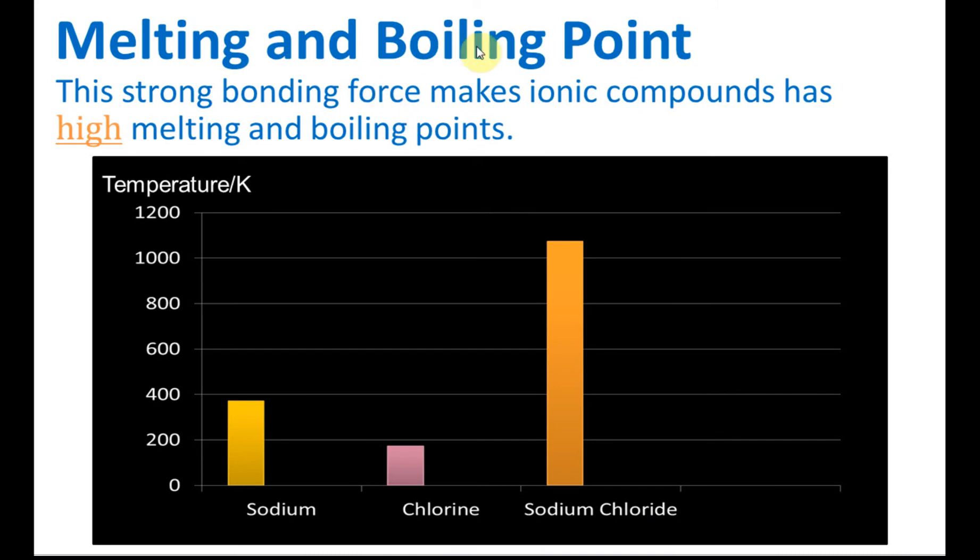The melting point and boiling point of ionic compounds usually are very high. For example, this is sodium. We can see that the melting point is around 370 Kelvin, and a melting point of chlorine is not even 200. But if these two atoms form ions attract each other's form ionic compound, sodium chloride, sodium ion and chloride ions, so the melting point increased tremendously to about 1,100 Kelvin.